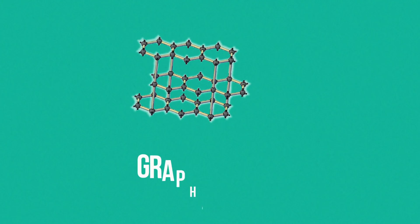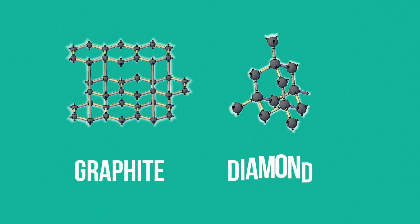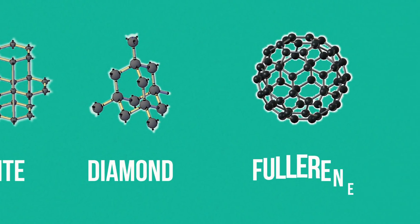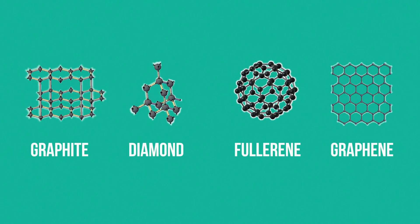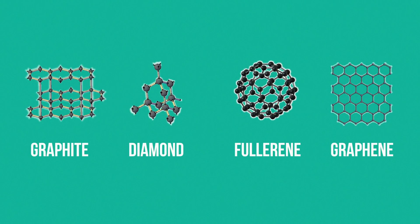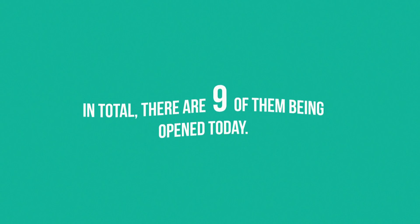Carbon, of course, is one of the most well-known examples of polymorphism. Graphite, diamond, fullerene, graphene — these are just a few modifications of carbon. In total, there are nine of them discovered today.